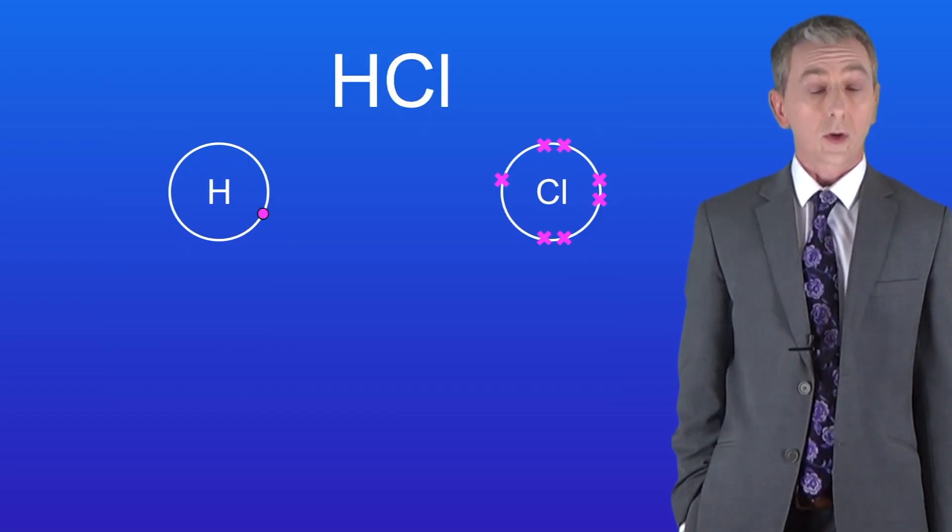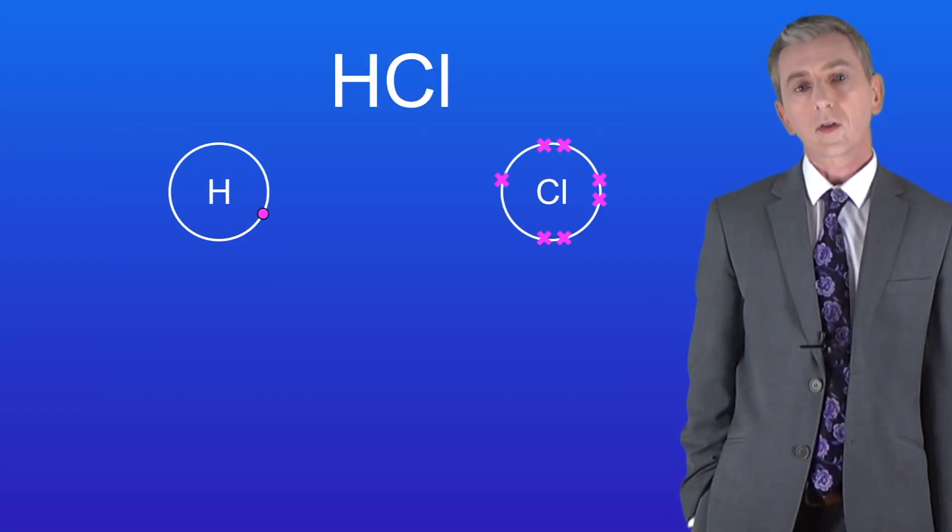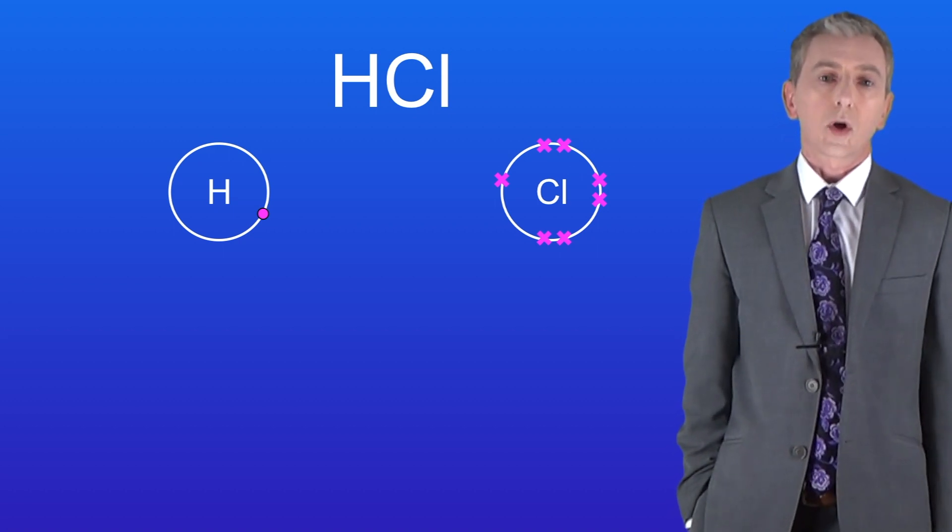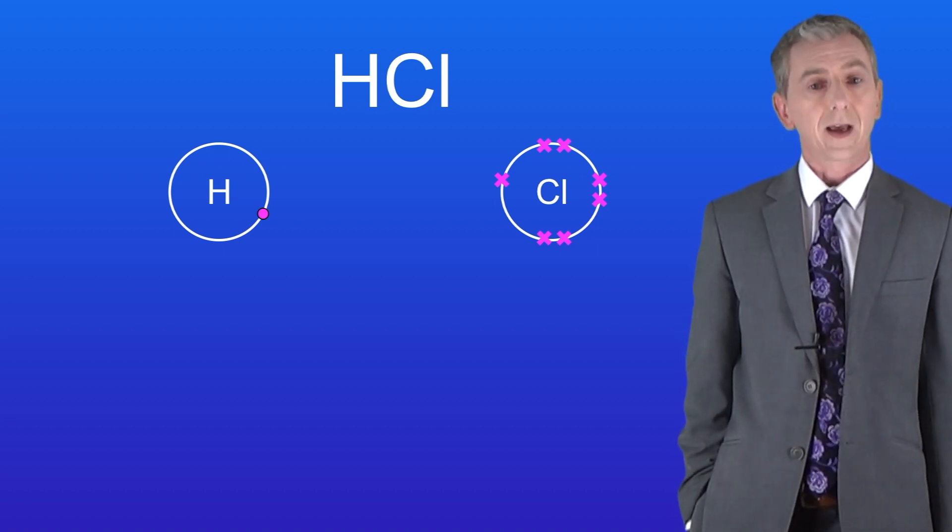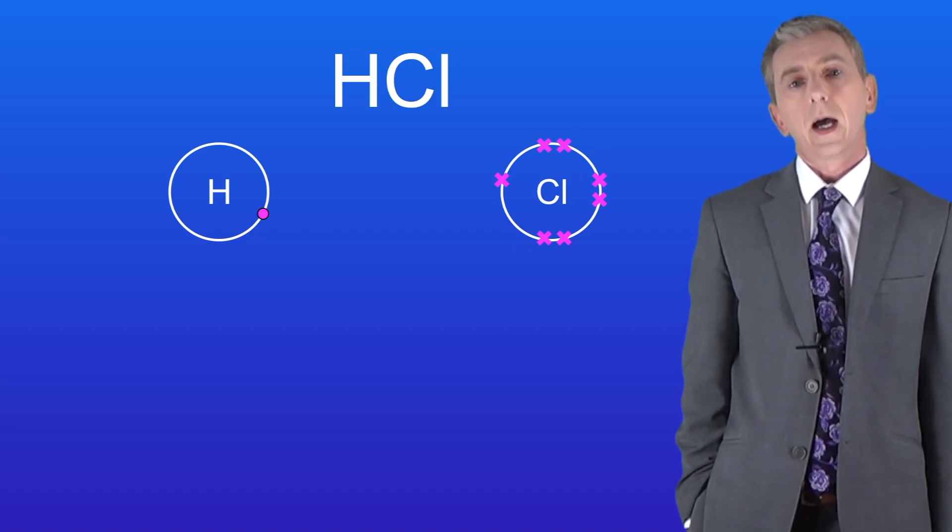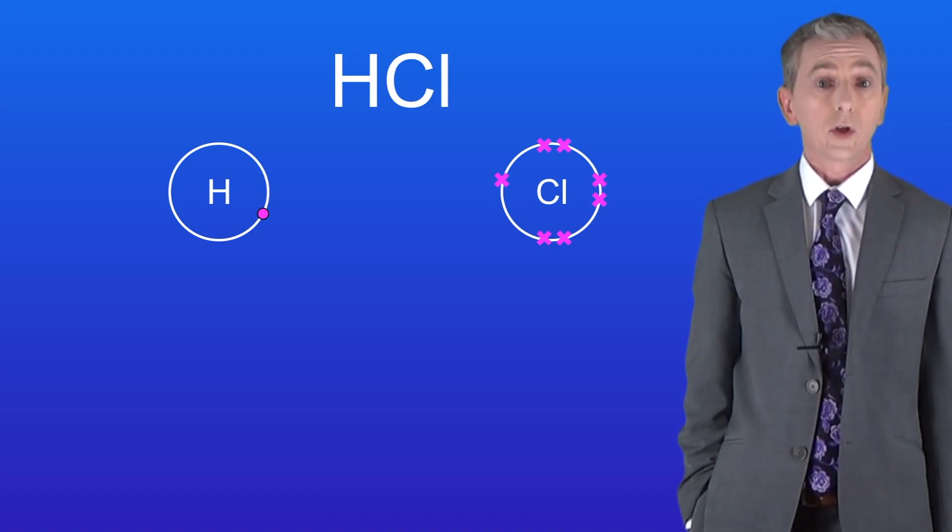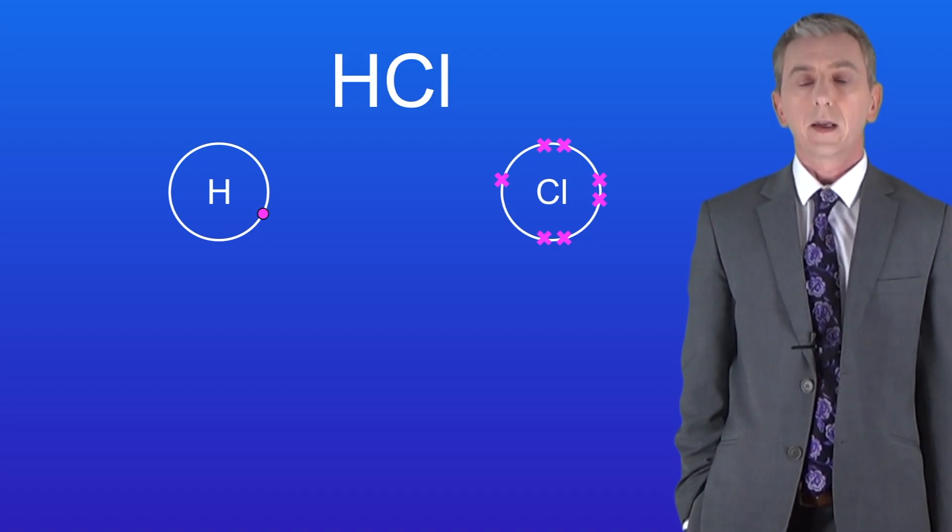Now we know that hydrogen has only got one electron. Chlorine's got 17 electrons so chlorine's got 7 electrons in its outer energy level. I'd like you to pause the video now and see if you can draw the covalent bonding in hydrogen chloride.